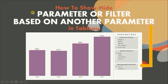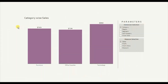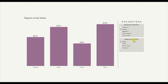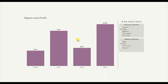In today's session we will see how to show or hide parameters or filters based on another parameter in Tableau. Let me first show you the demo of what we will be doing today. Here I have a bar chart that shows us category wise sales and I have added two parameters that allow the user to change the dimension or the measure. Now suppose a user wants to select region wise profit — from the dimension selection parameter we can select region and from the measure selection parameter we can select profit. So now the view gives us region wise profit.